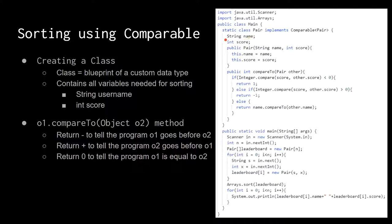You would declare the data types inside the Pair, tell the program how to create your Pair, and most importantly, you have to tell the program how to sort your Pair. If you tell Java to sort an integer array, that's pretty easy — it defaults from smallest to largest. But if you tell Java to sort a Pair, your program is going to say: what is a Pair? I've never heard of a Pair before. So you have to tell it how to sort your Pair.